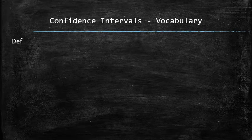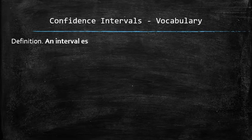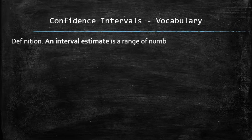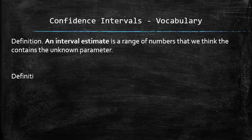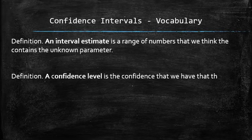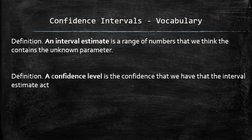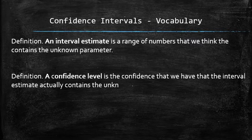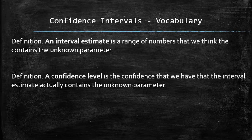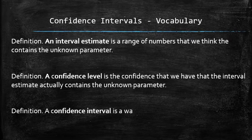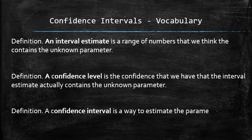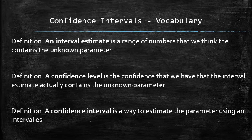We are going to introduce some vocabulary. An interval estimate is a range of numbers that we think contains the unknown parameter. A confidence level is the confidence that we have that the interval estimate actually contains the parameter. A confidence interval is a way to estimate the parameter using an interval estimate along with some confidence level.